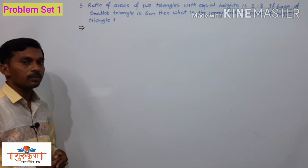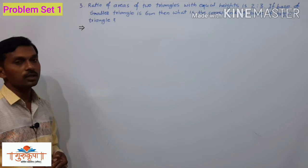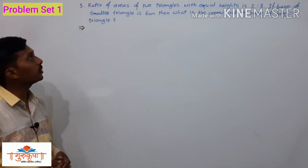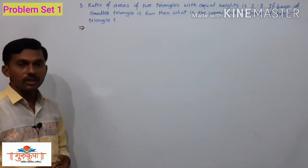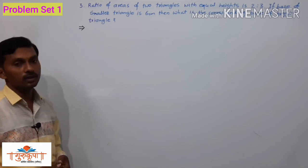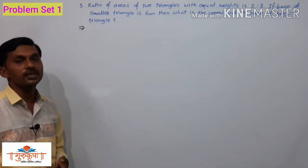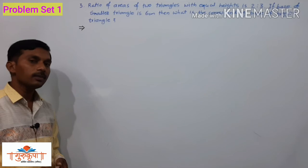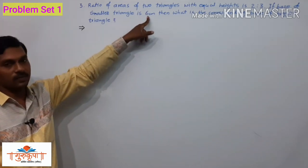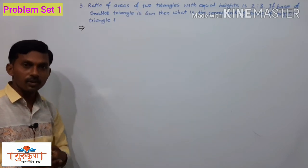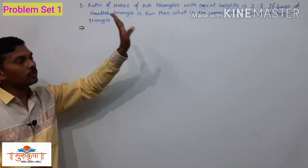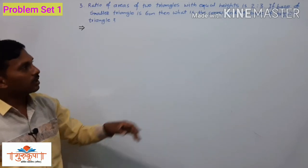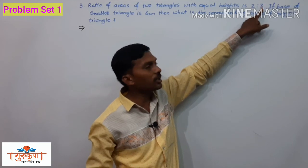Question 3: the ratio of the areas of two triangles with equal heights is 2 to 3. If the base of the smaller triangle is 6 cm, what is the corresponding base of the bigger triangle? The heights are equal, so by the property of ratios of areas of two triangles having equal heights, A1 upon A2 equals B1 upon B2.